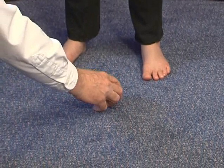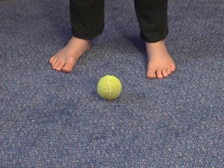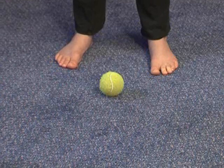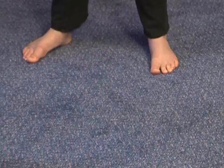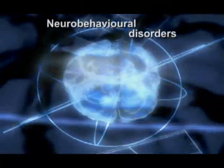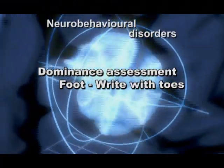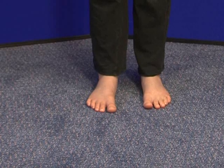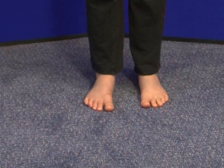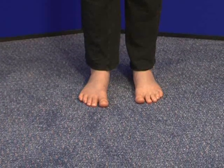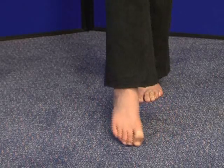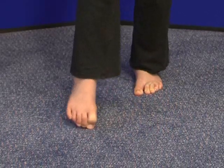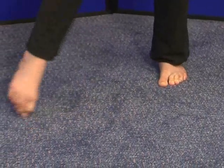A good test to determine foot dominance is to place a ball between the feet equally and ask the patient to kick the ball, noting which foot is used to initiate the movement. Another good test for foot dominance is to ask the patient to write their name as if writing it in the sand with their toes. This shows very clearly that the right foot is dominant in this case.